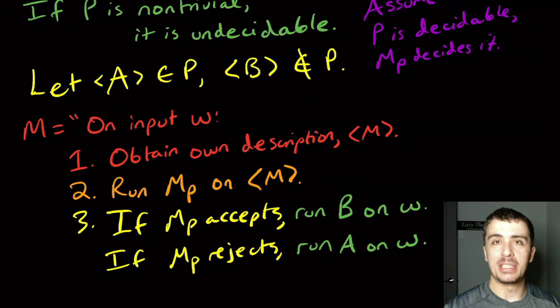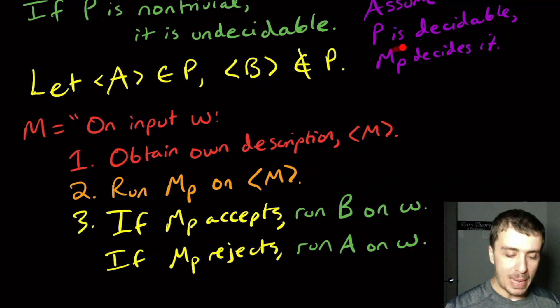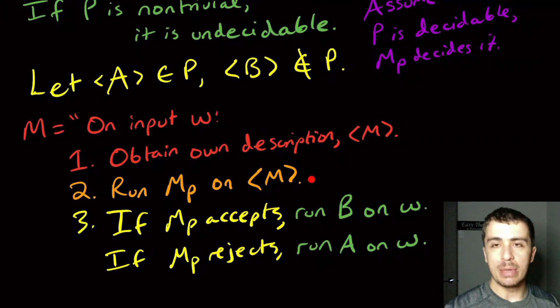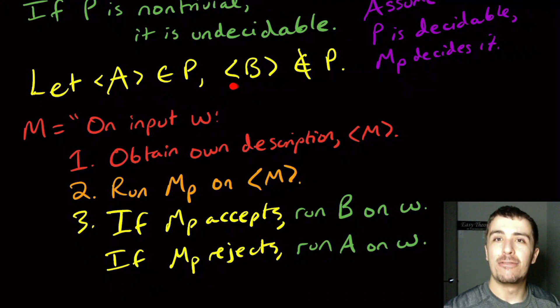By trying to get the machine to disagree with itself, we exploited the properties of Rice's theorem in that there must be some machine with the property and some machine that does not have the property.